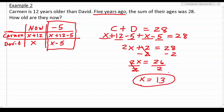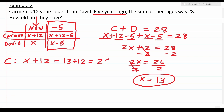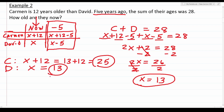Now that x equals 13, we go back to the now column. Carmen's age is x plus 12, which is 13 plus 12 equals 25. David's age is just x, which is 13. So Carmen is 25 years old and David is 13 years old.